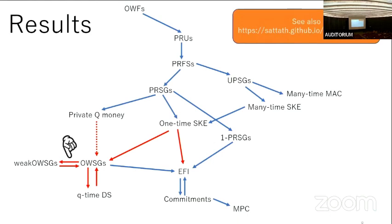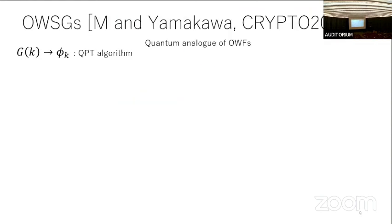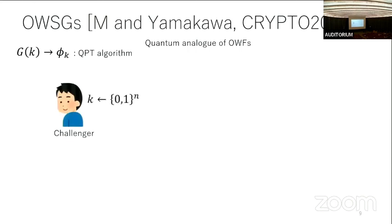First, I explain this result: the equivalence between one-way state generator and weak one-way state generator. A one-way state generator is a quantum analog of a one-way function — a quantum polynomial time algorithm that, on input a classical key K, outputs a quantum state Phi_K.